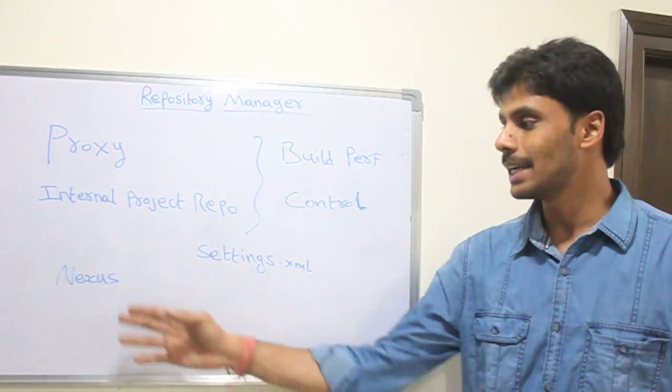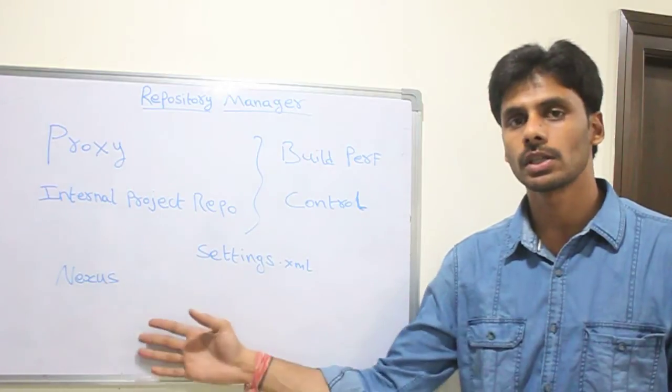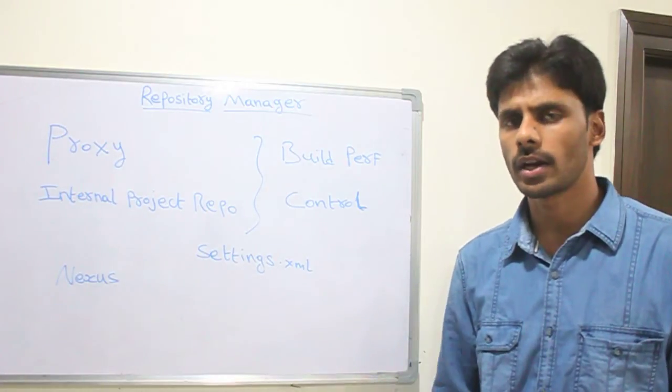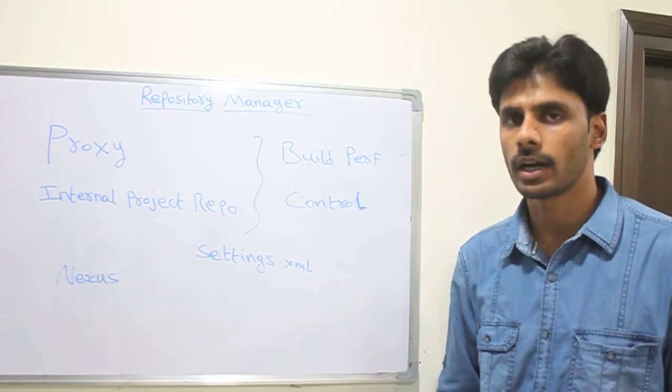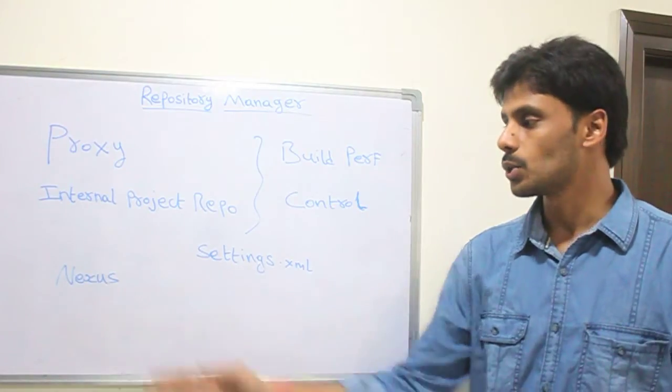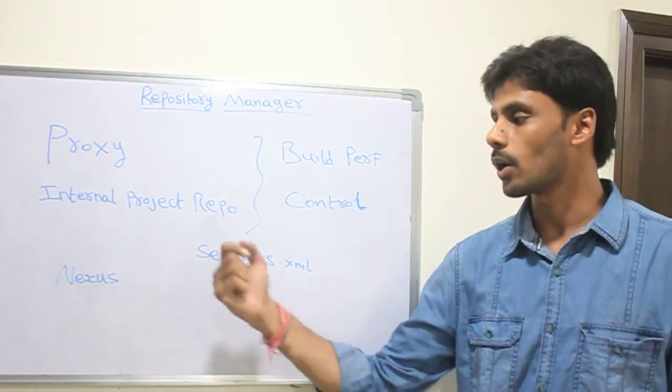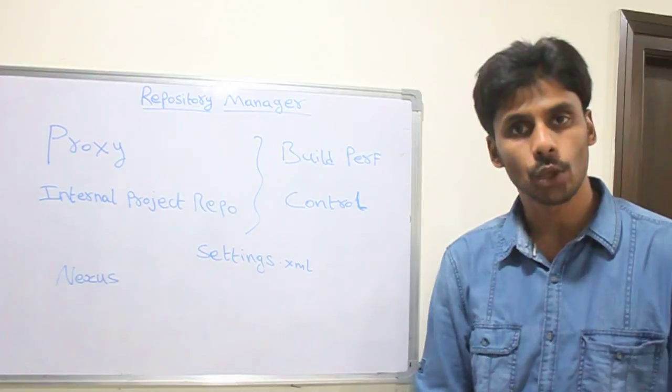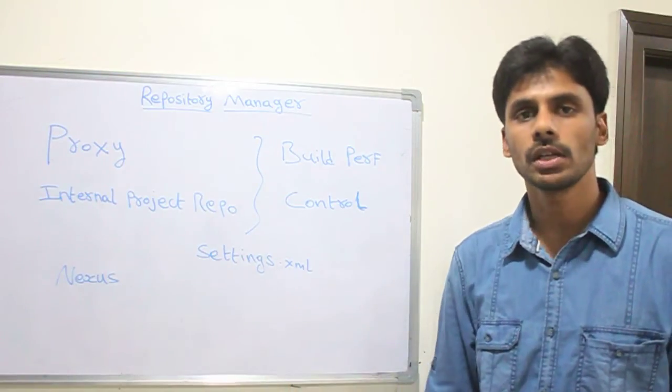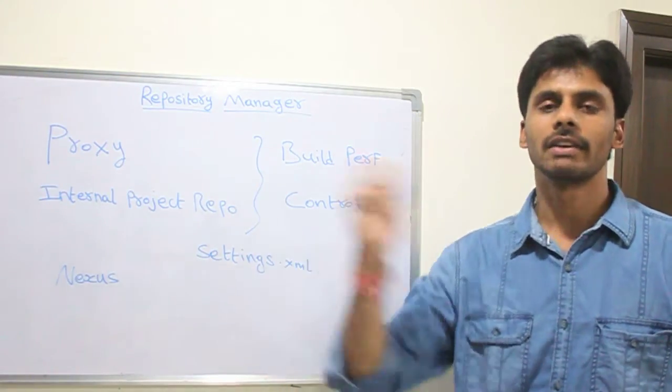It's very easy to download these repositories and configure them. Nexus is a famous Maven repository from Sonatype. You can easily download Nexus and run it—it uses Jetty as its container. You can run it on Jetty or you can run it on different web containers. Once you configure Nexus, you can use that URL or configure that URL in the settings.xml on a developer's machine.